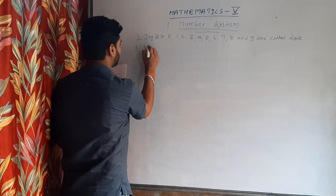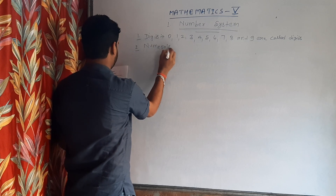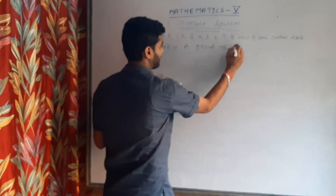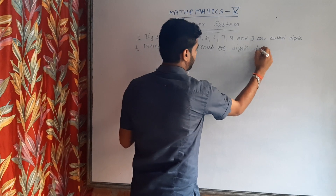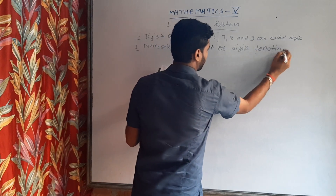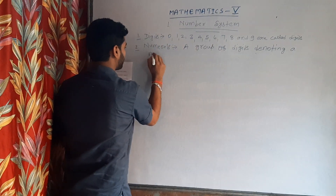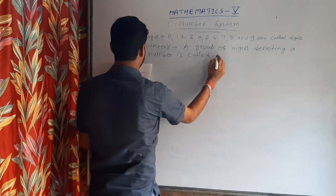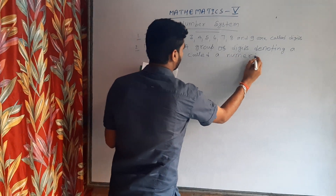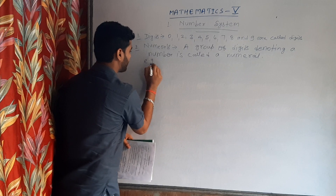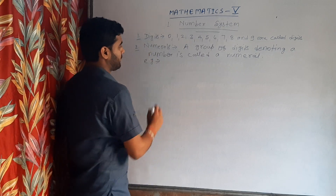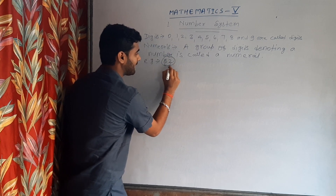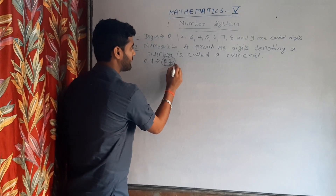Second: numerals. A group of digits denoting a number is called a numeral. As an example, if we write 32, it is a group of 3 and 2, so it is called a numeral.